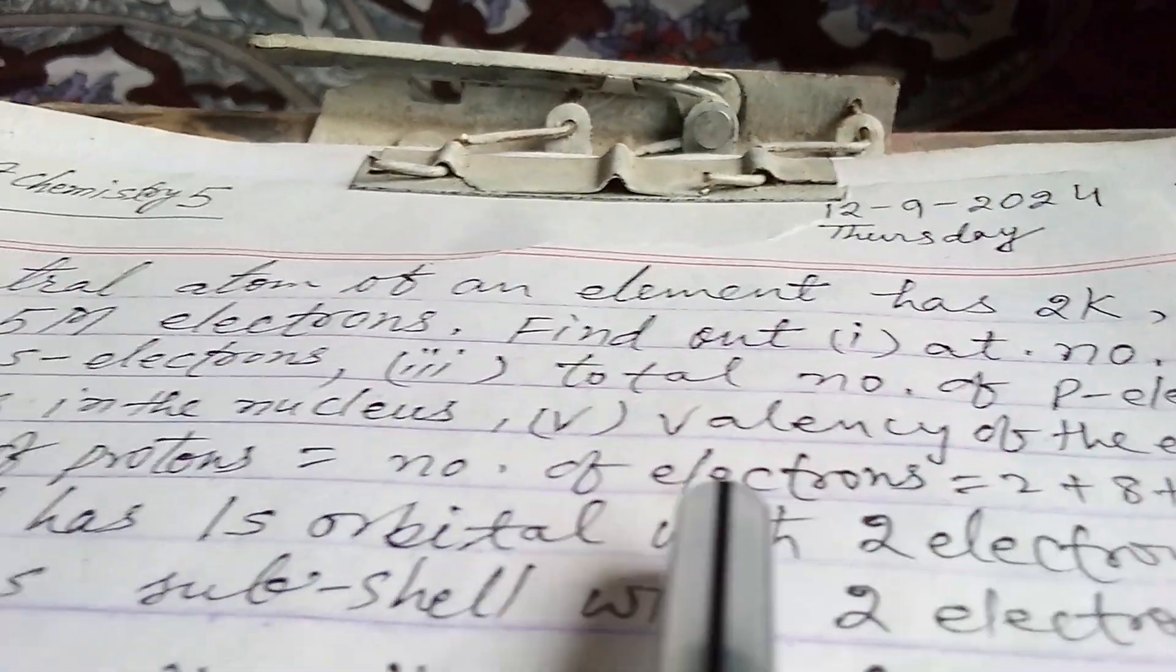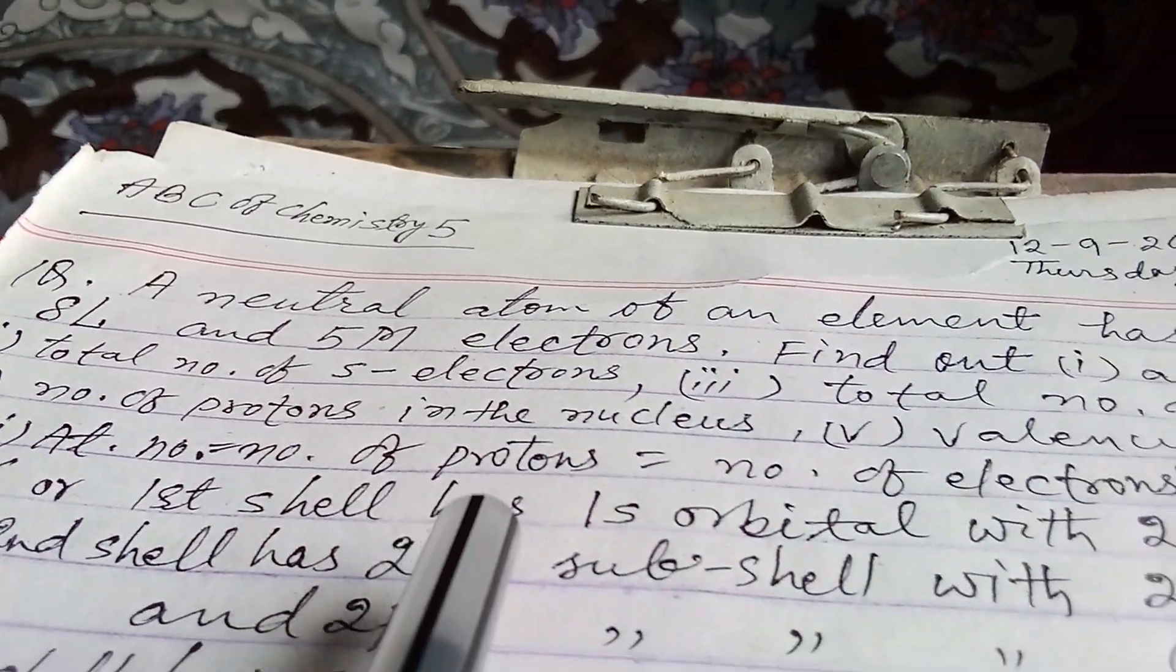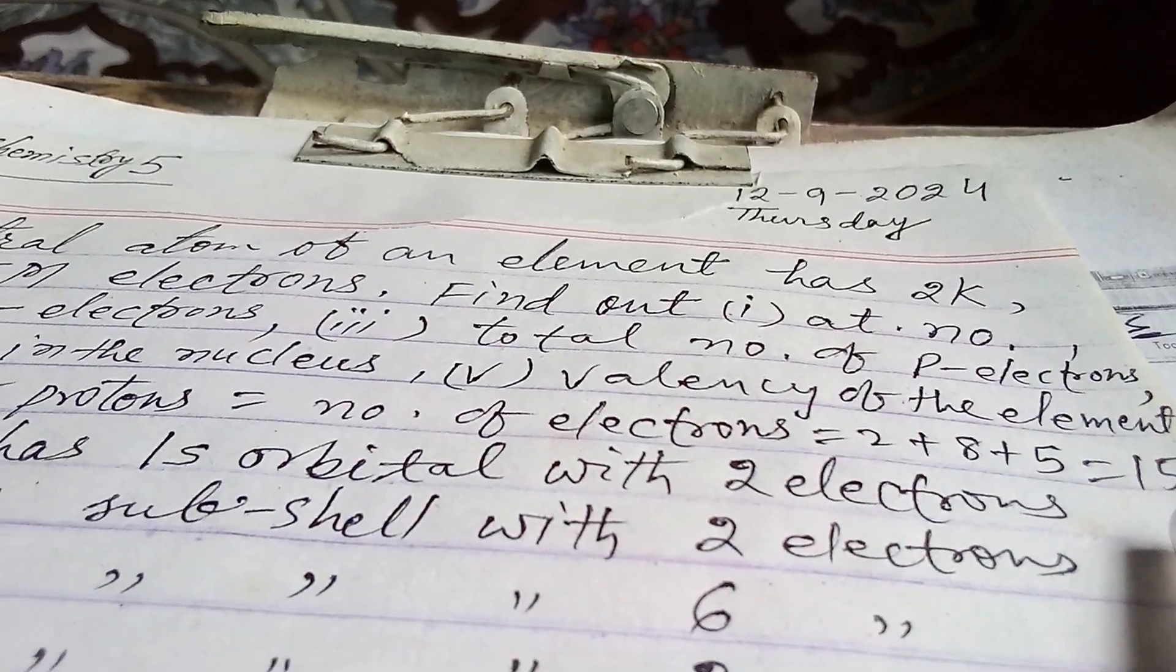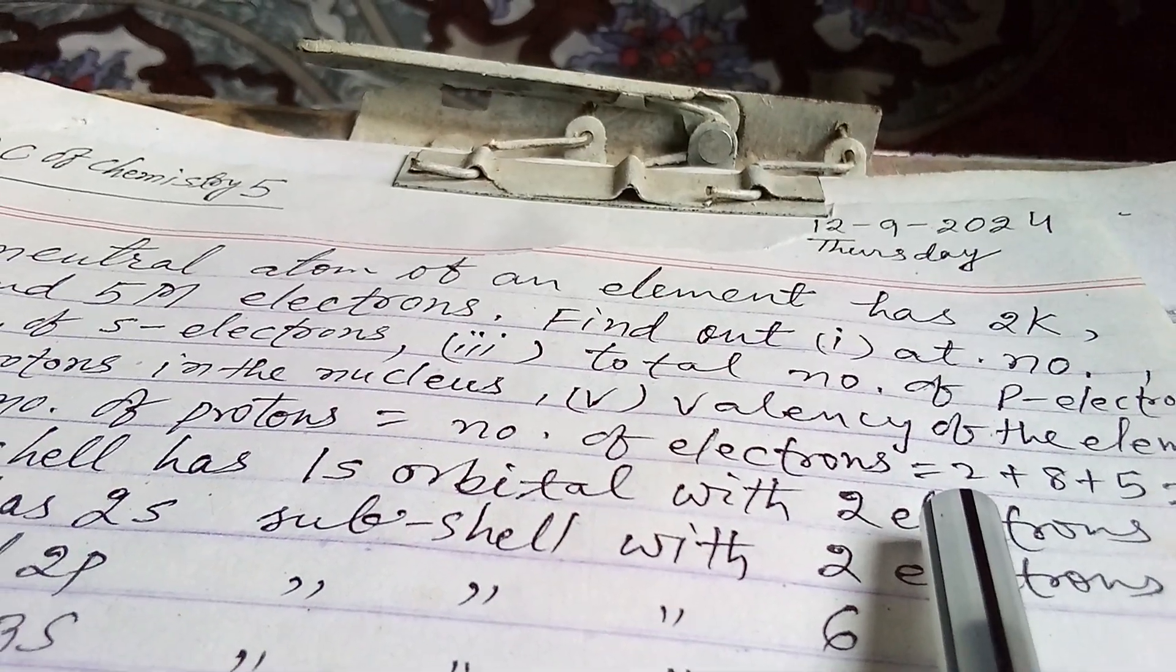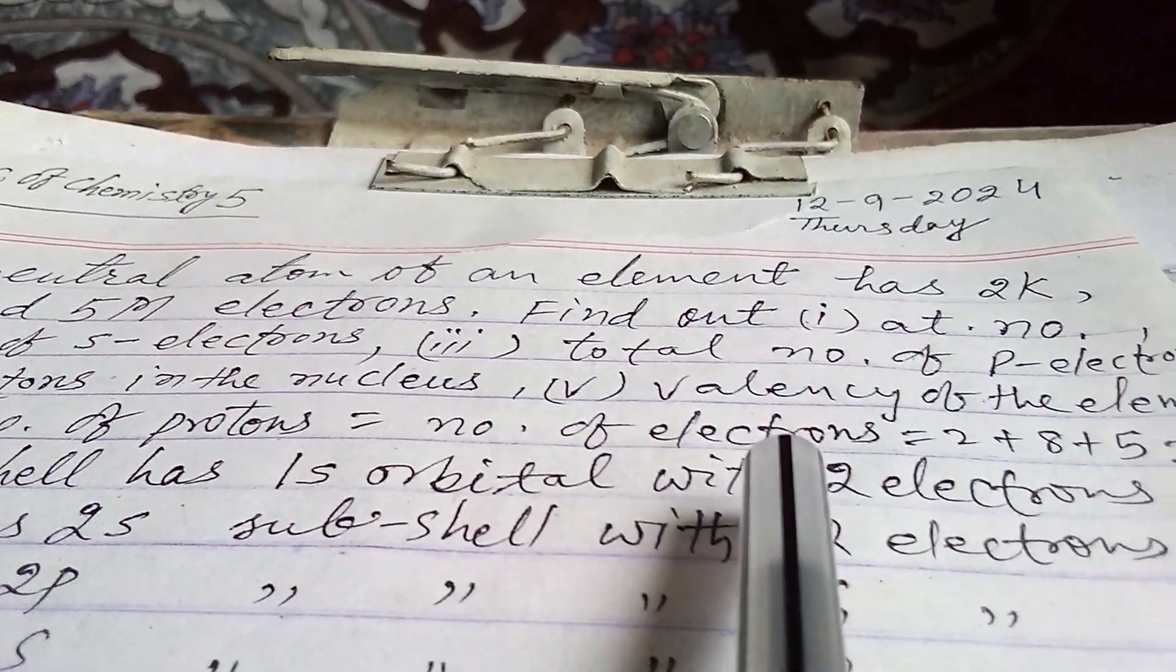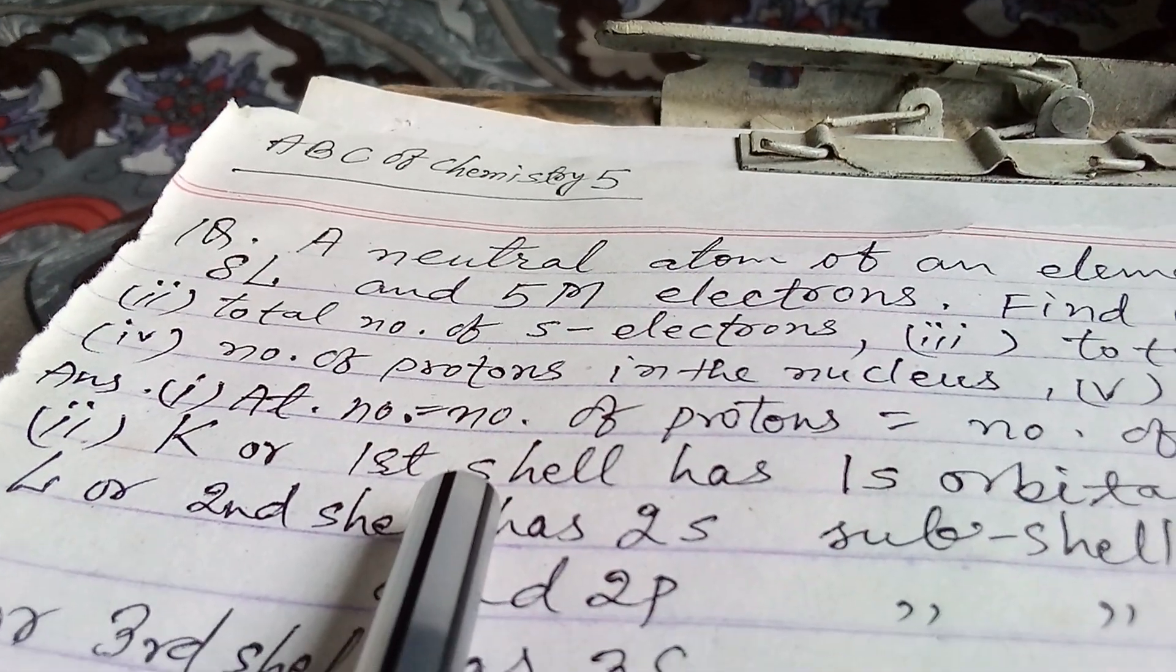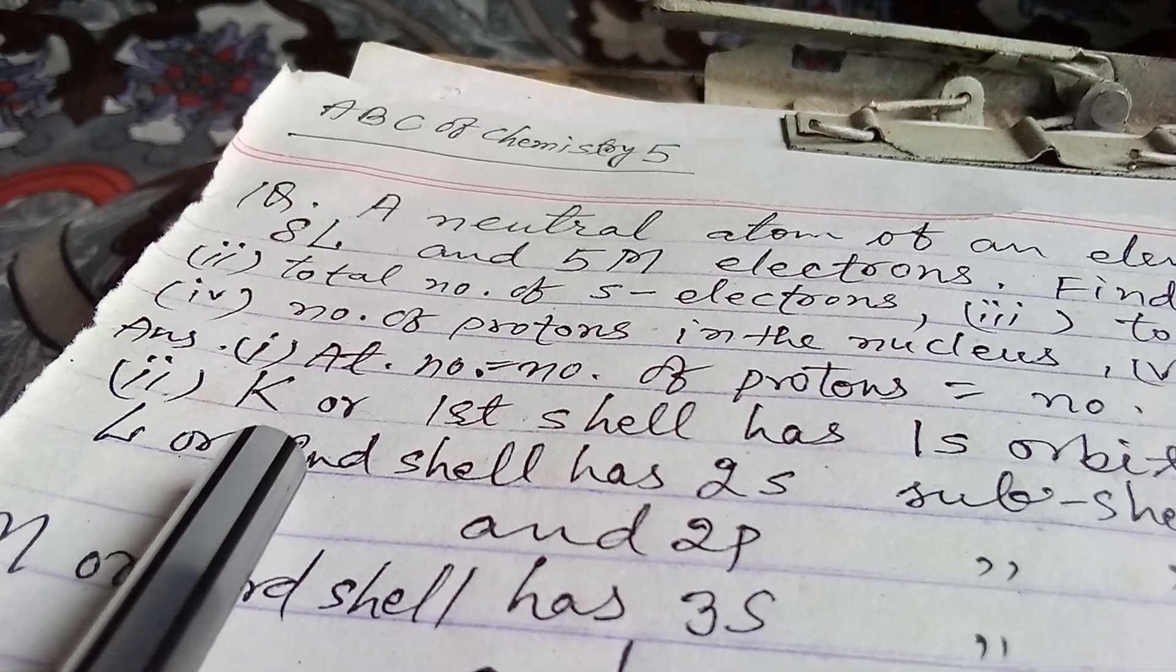The answer is: first, atomic number, that means number of protons, and that is equals to number of electrons. And so it is 2 plus 8 plus 5, that is equals to 15. As the question is, in the first orbital 2 electrons, second orbital 8 electrons, and third orbital is 5 electrons, so it becomes 15 electrons. And second is, we have to find total number of s electrons.